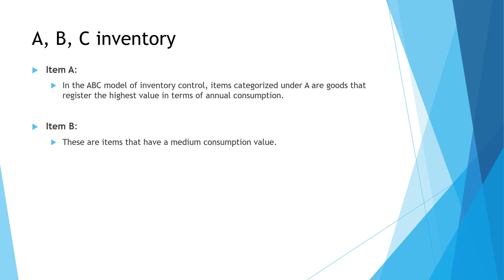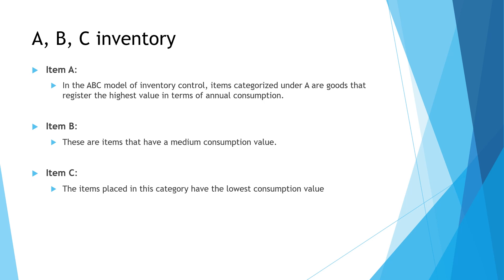Item B items have medium consumption and medium value — they amount to about 30 percent of total inventory and about 15 to 20 percent of total annual consumption value. Item C items have the lowest consumption value — they are the smallest items, costing only about 5 percent of annual consumption value, but they cover about 50 to 60 percent of your inventory items. In a manufacturing plant, examples could be screws, nails, or bolts — not very costly but required in huge quantities.